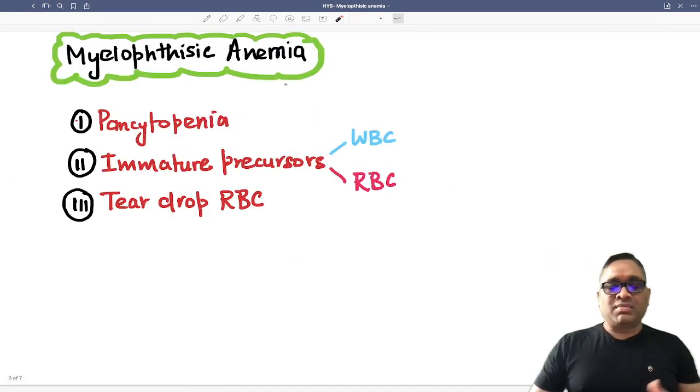In myelophthisic anemia, you will find characteristic triads. So what are the triads? Pancytopenia because of the lack of hematopoiesis.